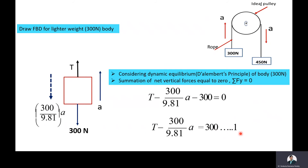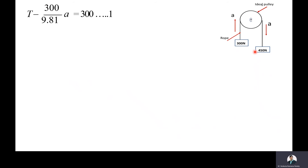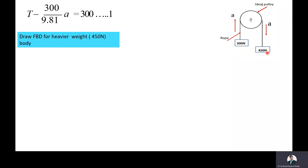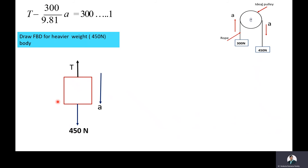Now we will draw the free body diagram for the heavier body — the 450N body. The 450N body moves vertically downward, so the tension in the rope acts vertically upward and the weight of the body acts vertically downward. Because the 450N body is moving vertically downward, the inertia force acts vertically upward. The inertia force is MA, where M equals 450 by 9.81, so (450/9.81)·A acts vertically upward.